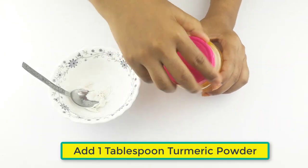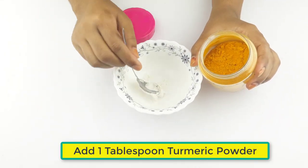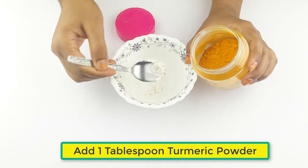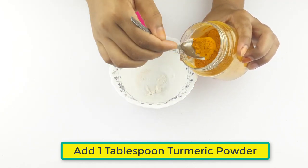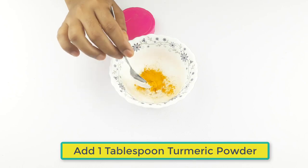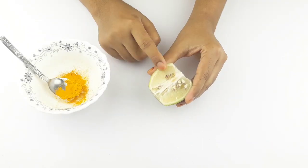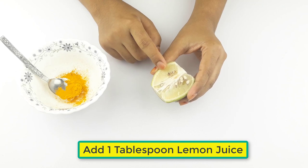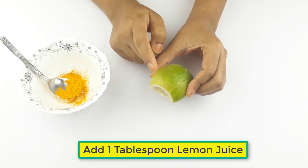Add one tablespoon of turmeric powder. Then add one tablespoon of lemon juice.